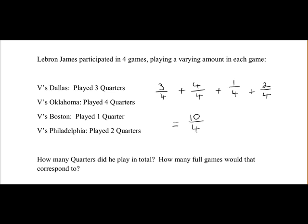If we were to convert that into full games, we'd write it as a mixed fraction. So to do that, we divide the denominator into the numerator, so 4 goes into 10 twice, remainder 2. So that's 2 full games and 2 quarters.